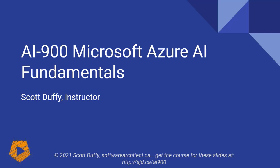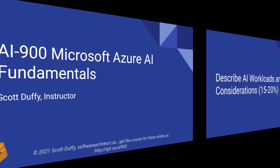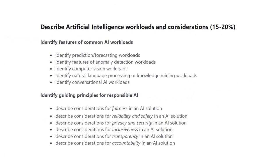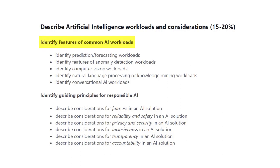Let's jump into the first section of the exam requirements. Those requirements say: describe AI workloads and considerations, and it's worth 15 to 20% of the exam. The first section talks about artificial intelligence workloads. We're going to talk about the features of common AI workloads, and then in the following section, we'll talk about some of the guiding principles for responsible AI.